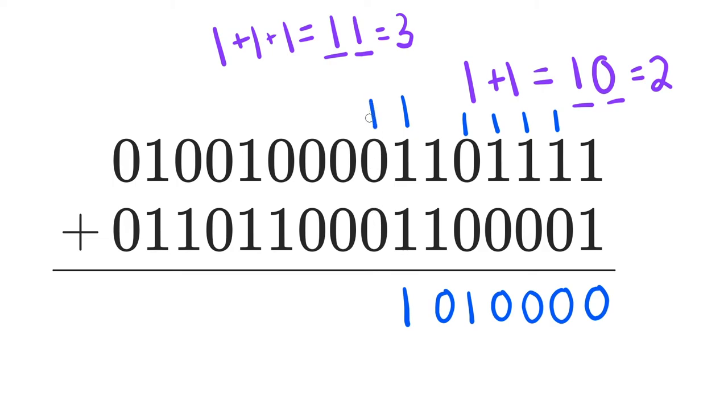Alright? So then we have 1 plus 0 plus 0 is 1. 0 plus 0 is 0. 0 and 0 is 0. 0 plus 1 is 1. 1 plus 1 is 2. So we put the 0, carry the 1.